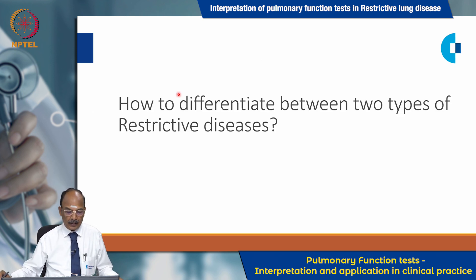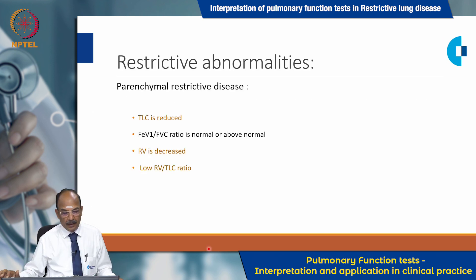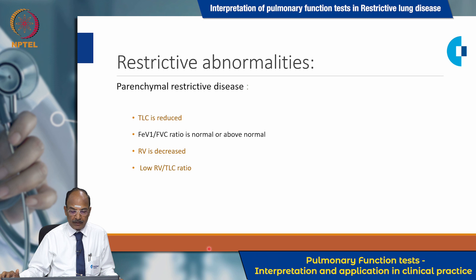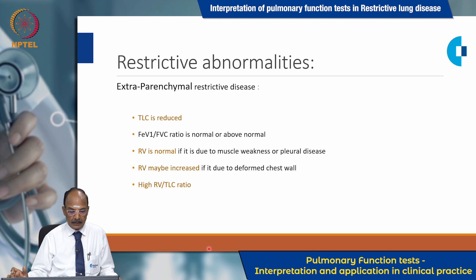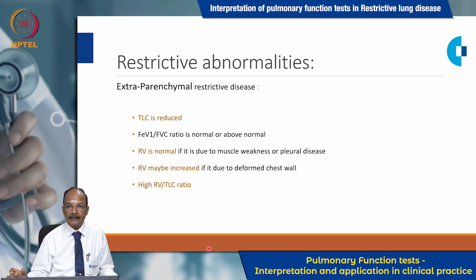How to differentiate between the two types of restrictive diseases? Parenchymal restrictive disease shows reduced total lung capacity, normal or above-normal FEV1/FVC ratio, decreased residual volume, and a low residual volume to TLC ratio. Whereas extra-parenchymal restrictive disease shows reduced total lung capacity, normal or above-normal FEV1/FVC ratio, normal residual volume if due to muscle weakness or pleural disease, or increased residual volume if due to a deformed chest wall, with a high residual volume to TLC ratio.